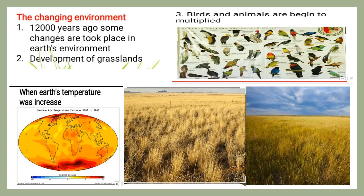The changing environment: it is believed that 12,000 years ago, a major change took place in Earth's environment and the Earth's temperature began to gradually increase. This led to the development of grasslands in many places. Birds and animals began to multiply in unprecedented numbers. Animals like deer, goats, sheep and others prospered and developed in these grasslands.